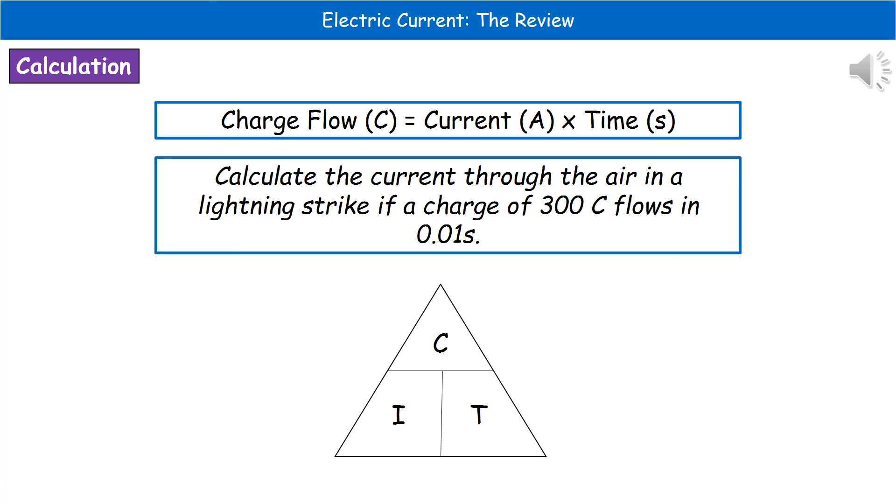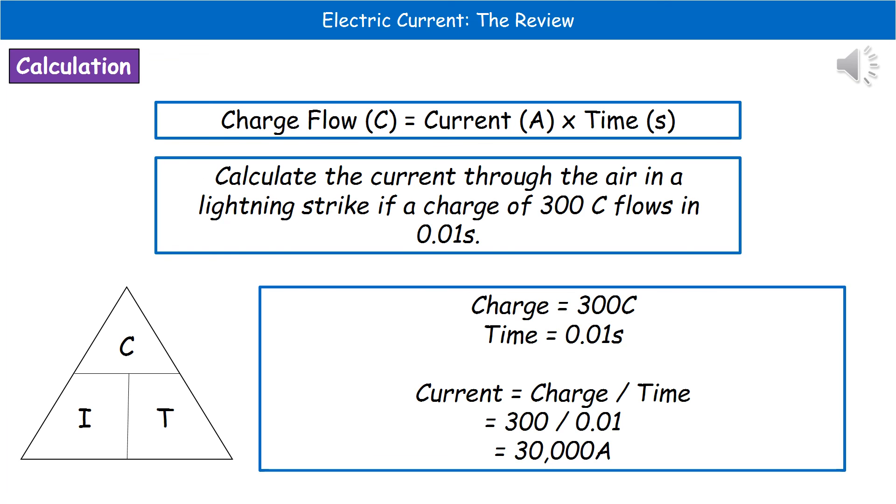Now, you can do that using the good old triangle method, or you can use your math skills just to rearrange normally. So if we have a look at what we've got in this one, we can see our charge is 300 coulombs. Our time is 0.01 seconds. None of the units actually need converting because they're in our standard units there.